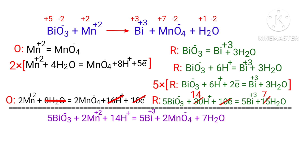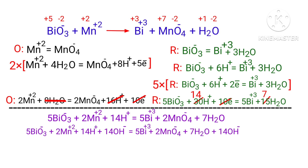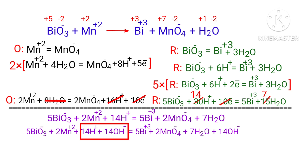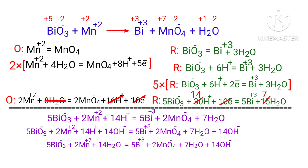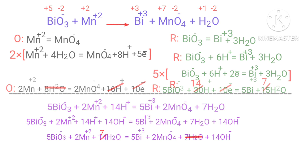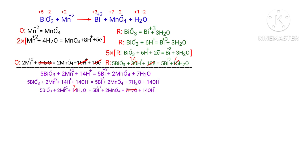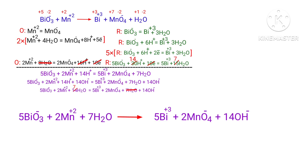For a reaction in basic medium, add one OH⁻ for every H⁺ present in the equation. The OH⁻ must be added to both sides to keep charge and atoms balanced. Then combine OH⁻ and H⁺ that are on the same side to form water, and cancel any identical terms on both sides.